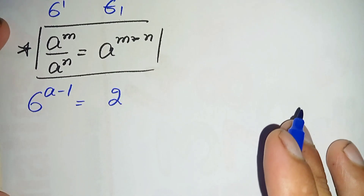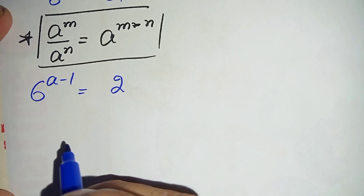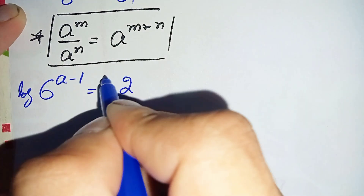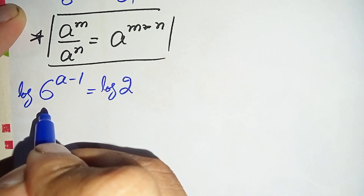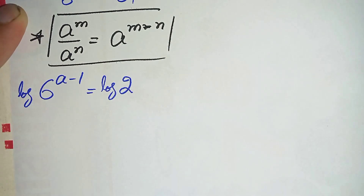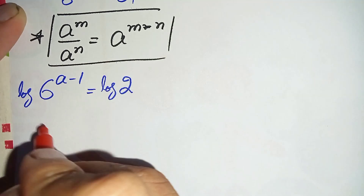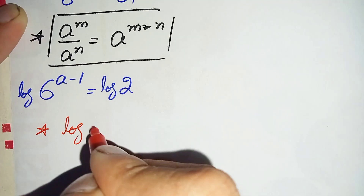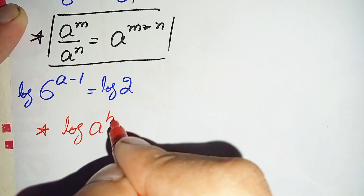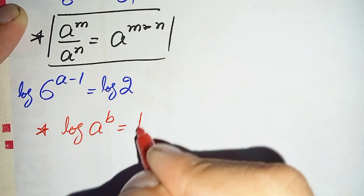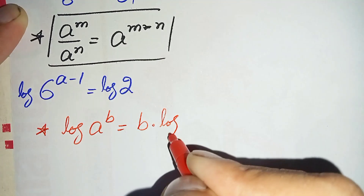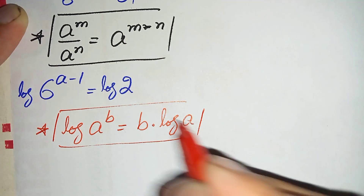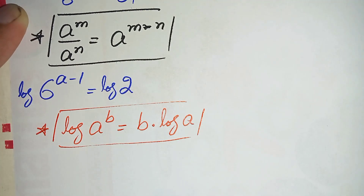Now we will take common log on both sides of this equation. On the left hand side we will use a logarithm property: log of a raised to power b can also be written as b times log of a. Using this log property, we move the power (a minus 1) to the front of log 6.